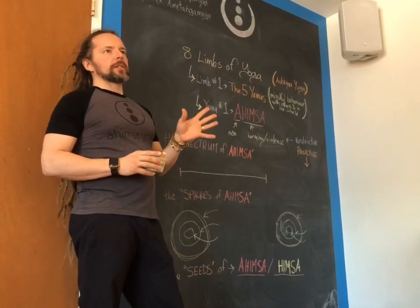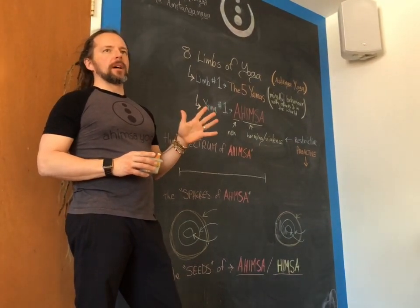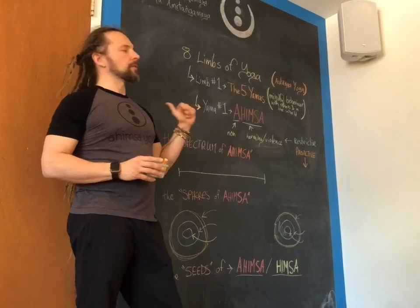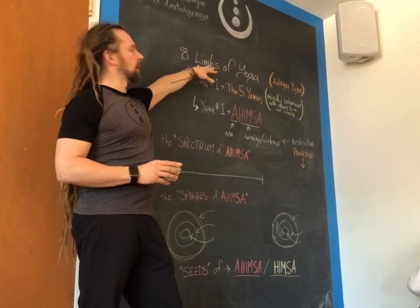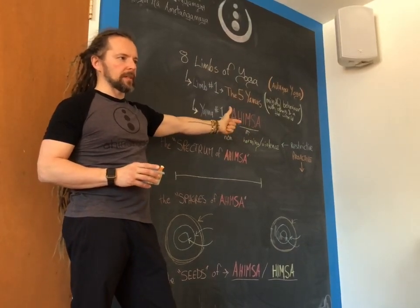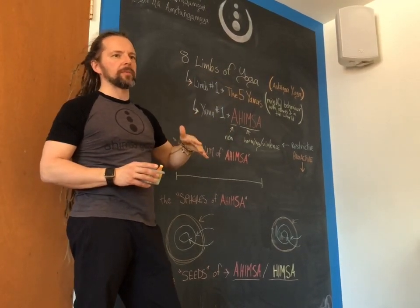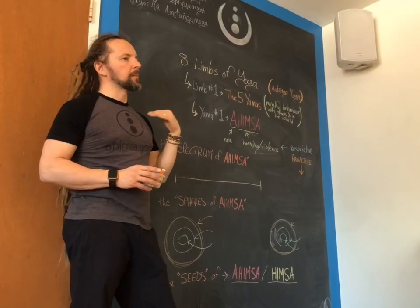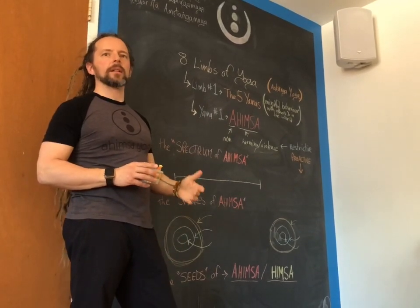This morning, we are going to start a little exploration of the five yamas. The five yamas are the first limb of the eight limbs of yoga. Some of you are very familiar with that. Some of you have been in my classes when we've done this stuff before. But even if you have heard this stuff before, hearing it again can be incredible. This is not like a checklist.